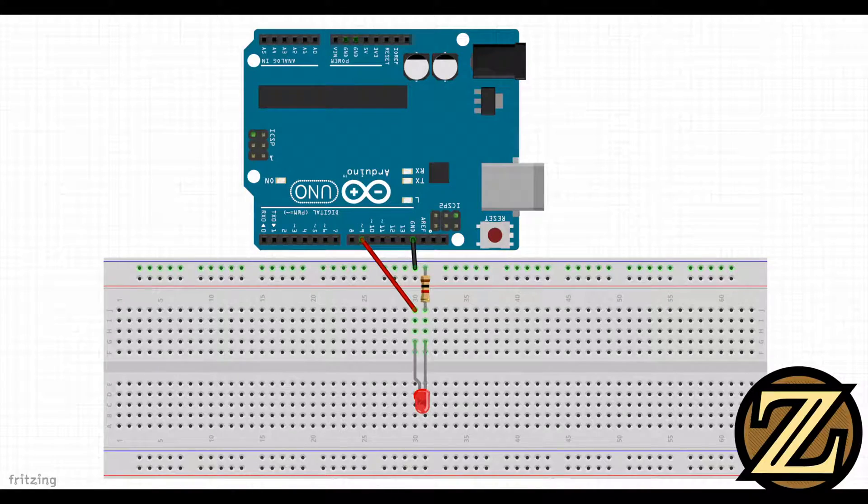Connect the long prong of the LED to digital 9. Connect the short prong to ground with a resistor. Here I'm using a 1000 ohm resistor. Now you'll notice digital 9 has a tilde next to it.